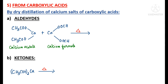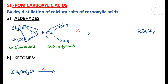By dry distillation of calcium salts of carboxylic acids, we can produce aldehydes and ketones. Aldehydes are obtained when a mixture of calcium salt of acetic acid (calcium acetate) is treated with calcium formate — the calcium salt of formic acid — and subjected to dry distillation. This gives two molecules of acetaldehyde (CH3CHO) plus calcium carbonate.